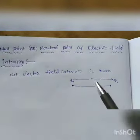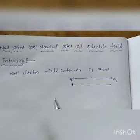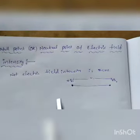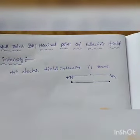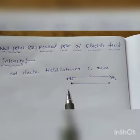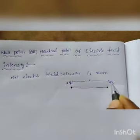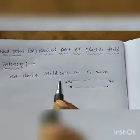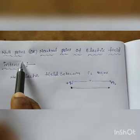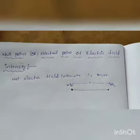Consider two charges q1 and q2 separated by a distance r. If both charges are positive — or both negative — they are like charges, which are repulsive. Due to this repulsion, somewhere between them there exists a point where the net electric field intensity is zero. That point is called the null point or neutral point.